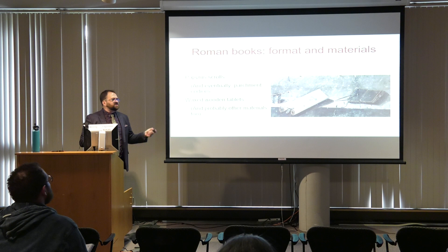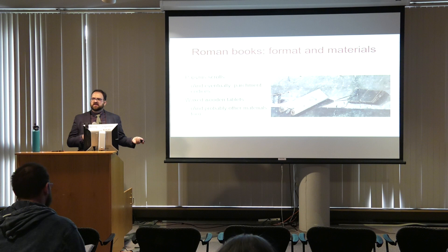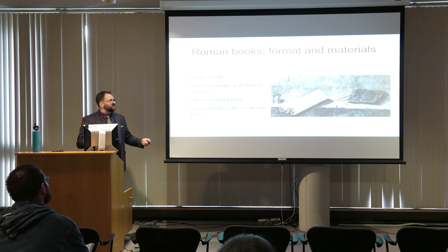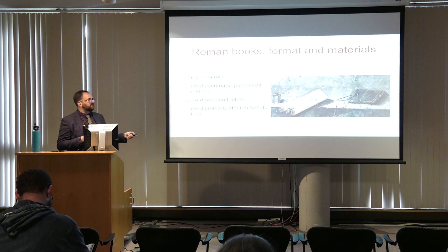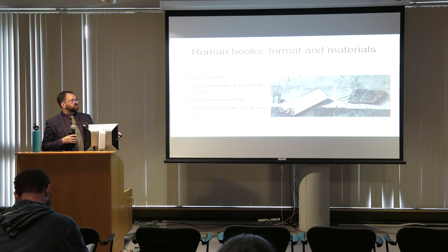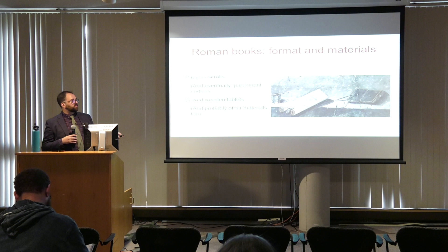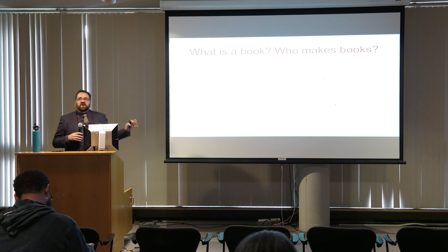When we tell these histories of book technology, we usually orient them around the object or the way objects are made. That raises a question for ancient historians: what is the defining technology of the Roman book? People might say it's the scroll or papyrus. But what I'm going to argue is that really the defining technology of Roman books is slavery — the Roman practices of enslavement threaded through all of Roman culture.